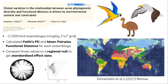I set out to map how PD and FD in birds are distributed across the planet and how the relationship between the two varies. We divided the world into one-degree by one-degree grid cells — approximately 17,000 different bird assemblages. We calculated Faith's PD and mean pairwise functional distance for each assemblage. You can't use raw Faith's PD because it's heavily influenced by species richness — so we used standardized effect sizes, permuting assemblages and comparing to empirical values.